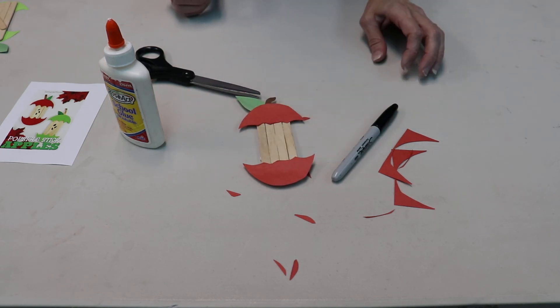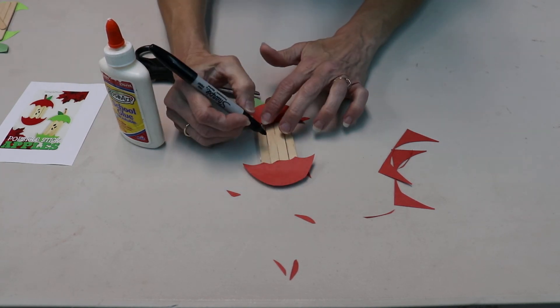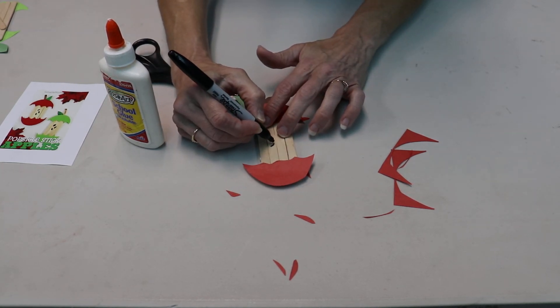The last thing you'll do is you'll take a marker. I just have a sharpie here. Take a marker and make some seeds for the apple core.